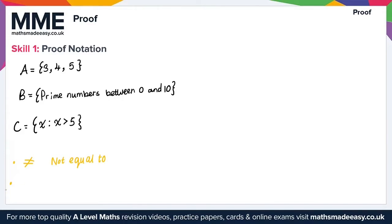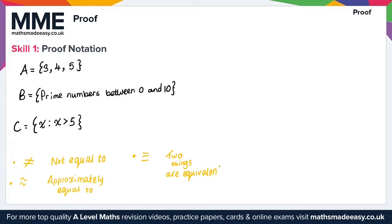The second variation is the approximately equal to symbol. The third variation of the equal symbol is the identity symbol — this is used when two things are equivalent. So that symbol is called the identity symbol.